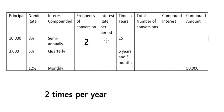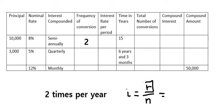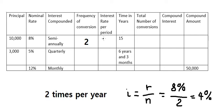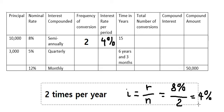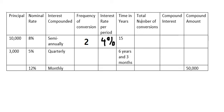Now, interest rate per period. The formula is I equals R divided by N, where N is the frequency of conversion. We know the interest rate is 8% nominal rate. So we divide 8% by 2 and we get 4%. We put 4% in here.